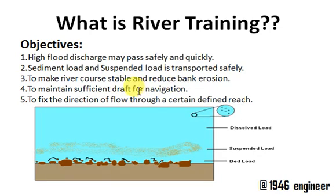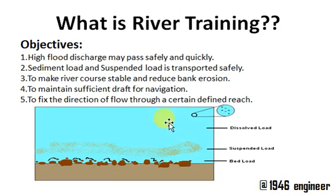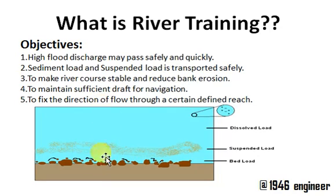River training works also help to make the river course stable and reduce bank erosion, and to maintain sufficient draft for navigation. When sediment accumulates, the available draft may not be sufficient for navigation. River training works maintain the necessary draft, and to a certain extent also fix the direction of flow.